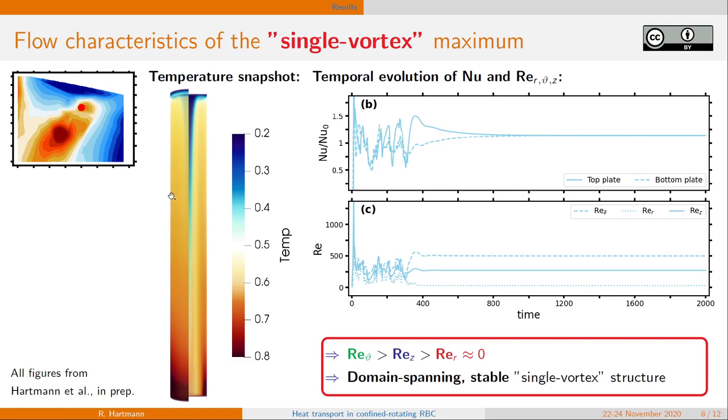Could be vice versa with hot fluid rising in the center and a curtain of cold fluid sinking at the sidewalls. But the interesting thing is that this vertically asymmetric flow structure appears to be pretty stable in time as well. And it shows its own flow characteristics with predominant azimuthal motion still for a rotating regime. But the radial component is nearly suppressed.